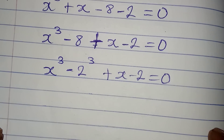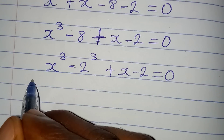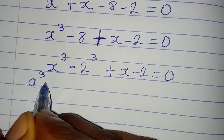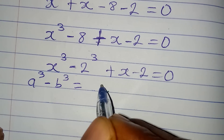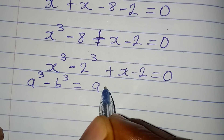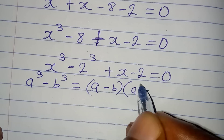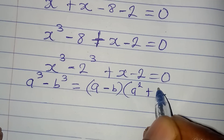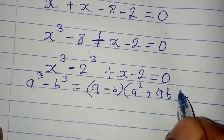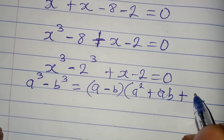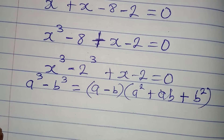The next step is to apply the difference of cubes rule. If you have a cubed minus b cubed, it equals a minus b, times the bracket a squared plus ab plus b squared.